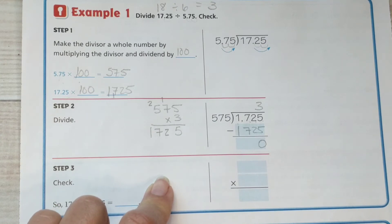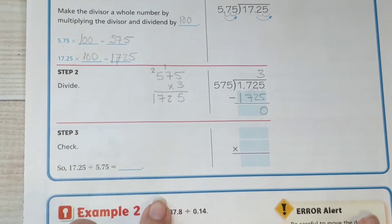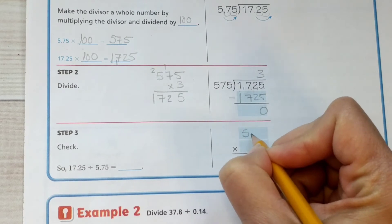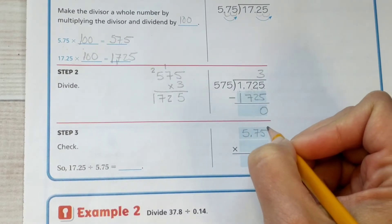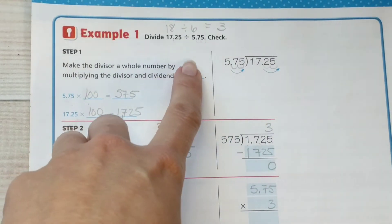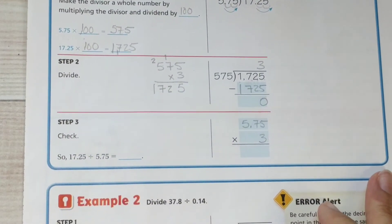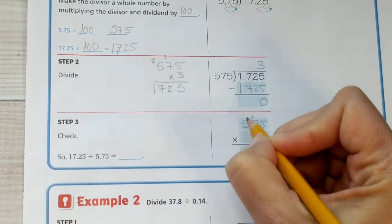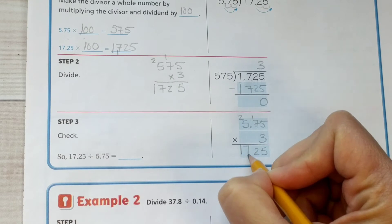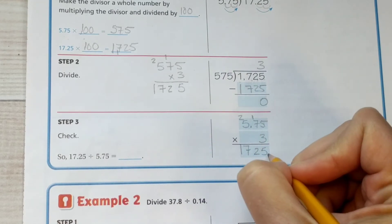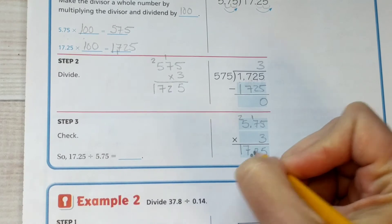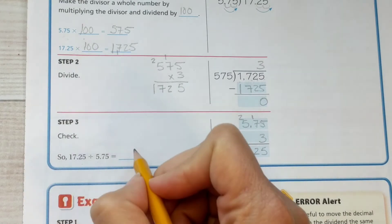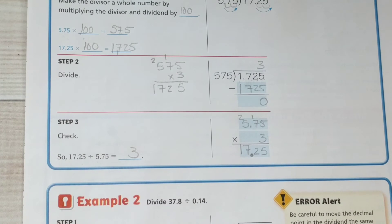This time they want us to check our answer, so we're going to multiply. We're going to start with 5.75, so 5 and 75 hundredths times 3, because that was our original number. This is 15, regroup the 1, 21, 22, 17. There's 2 digits behind the decimal, 1, 2, so our decimal goes right there. So 17 and 25 hundredths divided by 5 and 75 hundredths is, in fact, 3. We proved that that was correct.